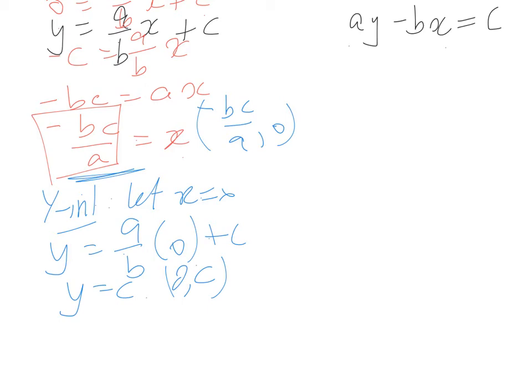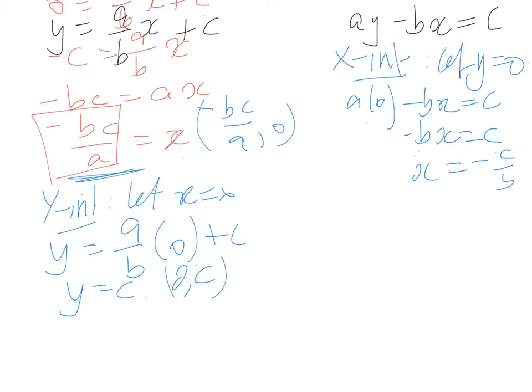So for our x-intercept, it doesn't matter which one you do first. Let y equals 0. So we've got a times 0 minus bx equals c. So a times 0 is 0. So negative bx equals c. Divide both sides by negative b. We've got x equals negative c over b. That's our x-intercept.